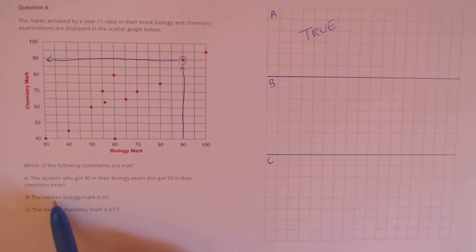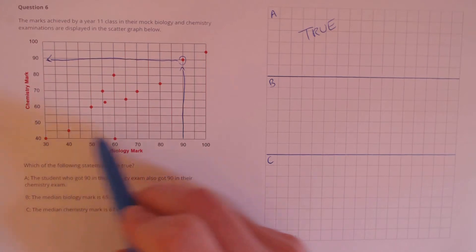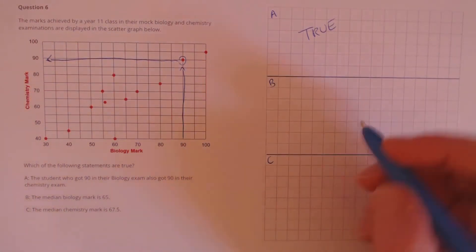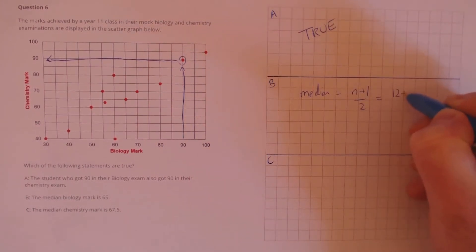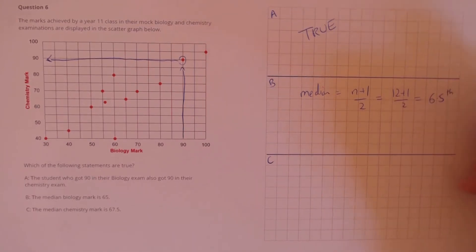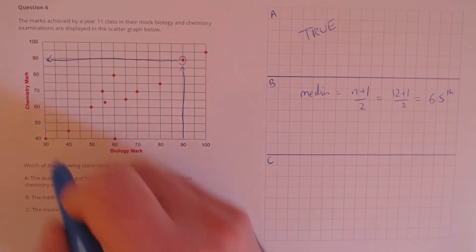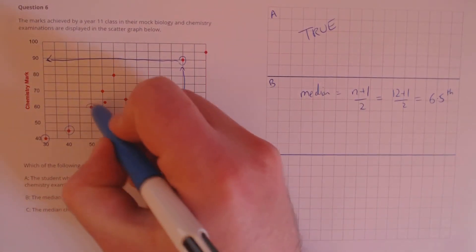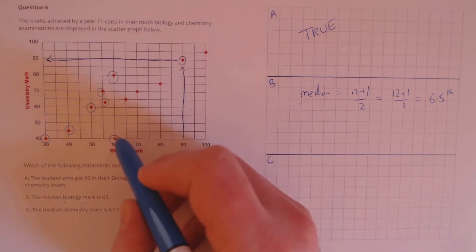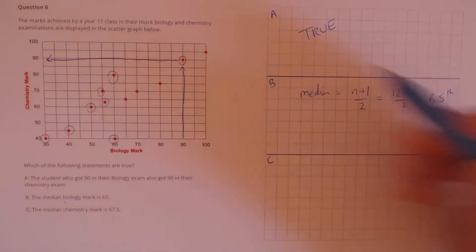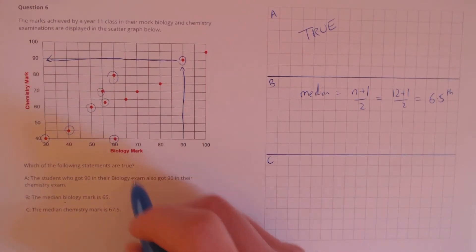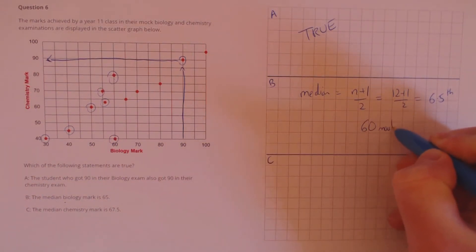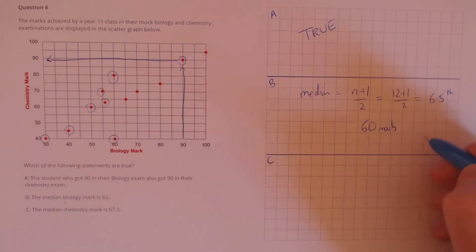For statement B, the median biology mark is claimed to be 65. Counting up we have 12 pupils, so the median is given by (12+1)/2 = 6.5, meaning it's halfway between the 6th and 7th values. Counting up on the biology axis: 1, 2, 3, 4, 5, 6, 7 — the 6th and 7th place both have the same score, so the median is that score, which is 60 marks. The claim was 65, so that's clearly false.